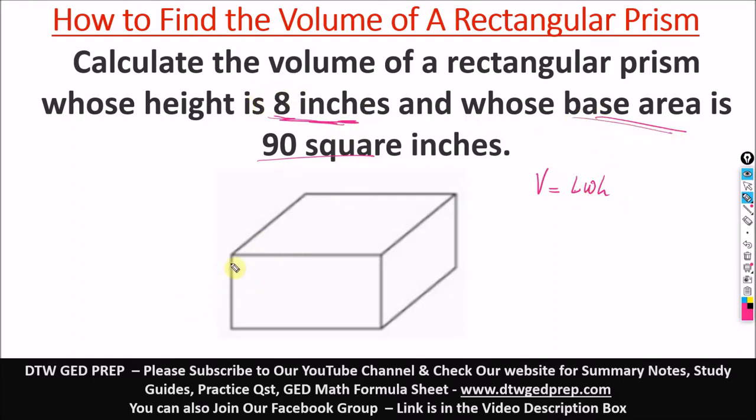The height is 8 inches. The height of a prism is from here to here. The length is from here to here, and the width is from here. I'm supposed to draw this line like this. This is W, while this is L.